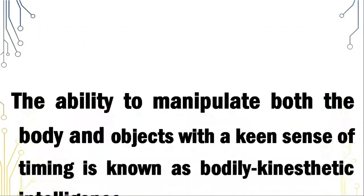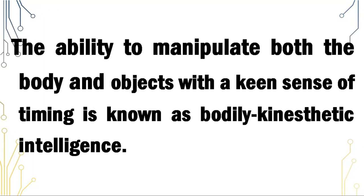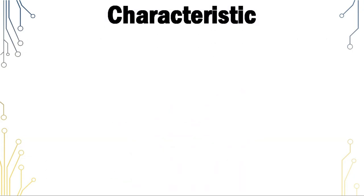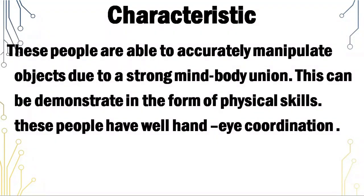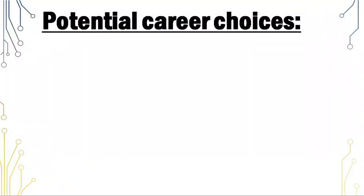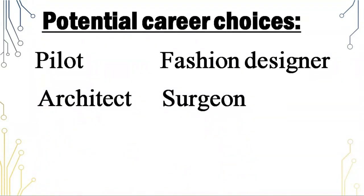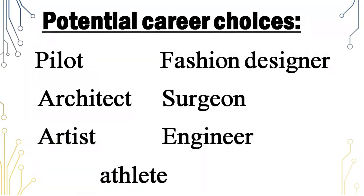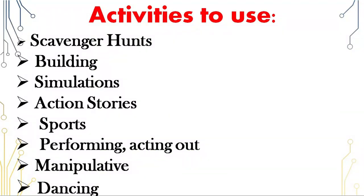Bodily kinesthetic intelligence: the ability to manipulate both body and objects with a keen sense of timing is known as bodily kinesthetic intelligence. People with this kind of intelligence are able to accurately manipulate objects due to a strong mind-body union, demonstrated in the form of physical skills, and they have well-developed hand-eye coordination. Potential career choices include pilot, fashion designer, architect, surgeon, artist, engineer and athlete. School activities to activate this intelligence include scavenger hunts, building, simulations, action stories, sports, performing, acting out, manipulatives and dancing.